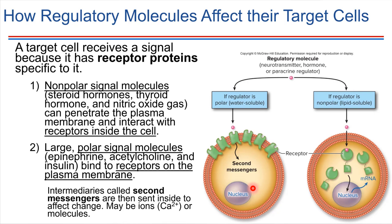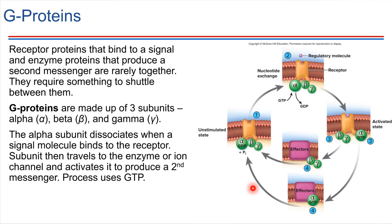Let's look at how second messengers might function. The example we're going to walk through involves something called a G protein. It's called a G protein because its energy source is GTP instead of ATP. Let's take a look at how a G protein would function.